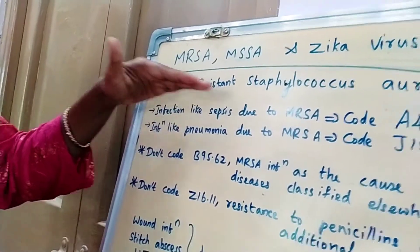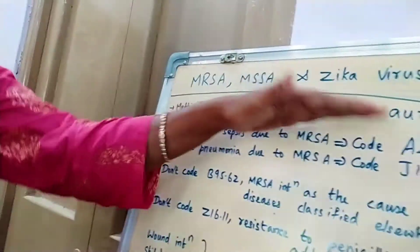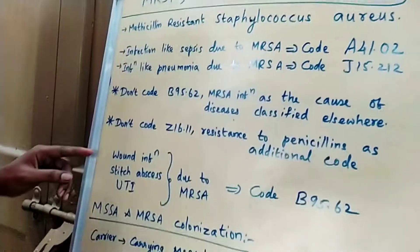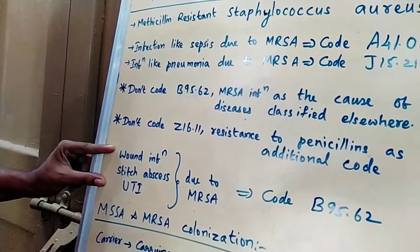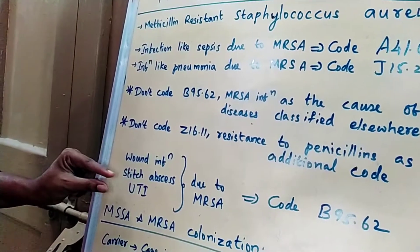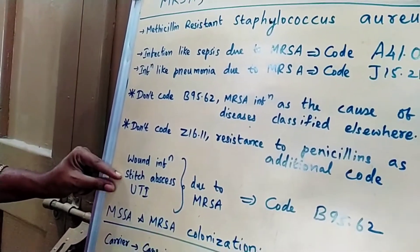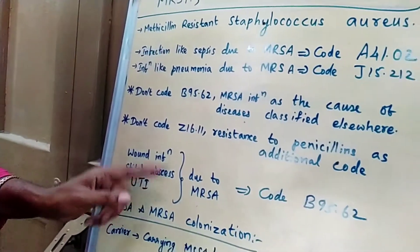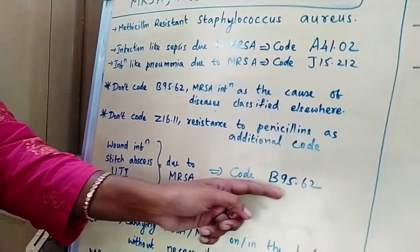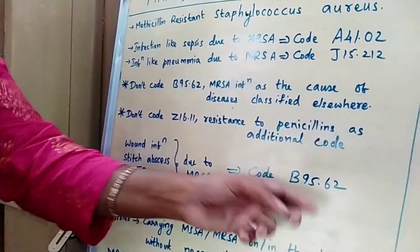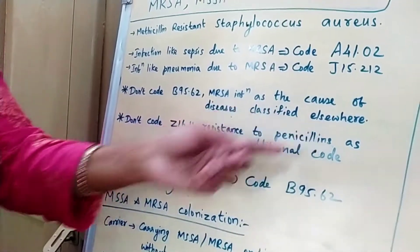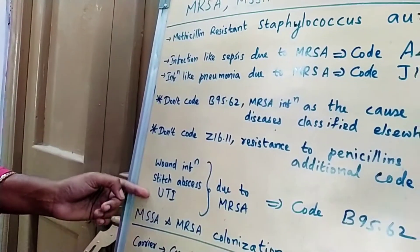The combination code itself tells you methicillin-resistant Staphylococcus aureus. However, if the current infection is a wound infection, stitch abscess, or UTI (urinary tract infection) caused due to MRSA, then we code B95.62. These 'diseases classified elsewhere' examples include wound infection, stitch abscess, and UTI.